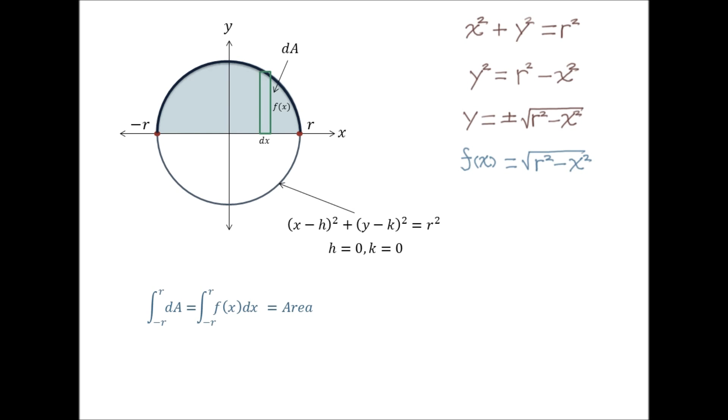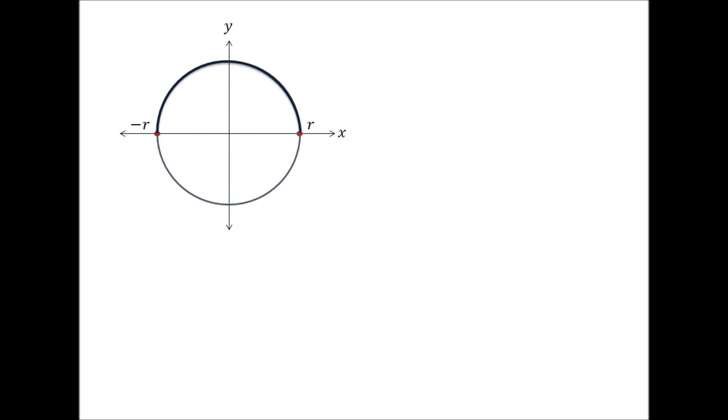But now, in the disk method, instead of an instantaneous rectangular strip, we now take an instantaneous cylindrical disk of radius f of x and height dx, with its instantaneous volume dV equal to pi times f of x squared times dx, because the volume of a cylinder is pi times height times radius squared. And integrating this from negative r to r, we will then get the volume of our sphere.